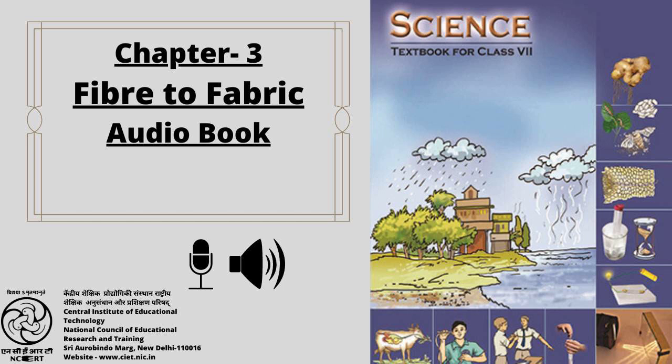8. Match the words of Column 1 with those in Column 2. Column 1: 1. Scouring. 2. Mulberry leaves. 3. Yak. 4. Cocoon. Column 2: A. Yields silk fibres. B. Wool-yielding animal. C. Food of silkworm. D. Reeling. E. Cleaning sheared skin.